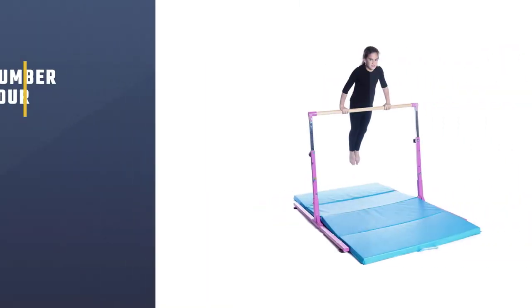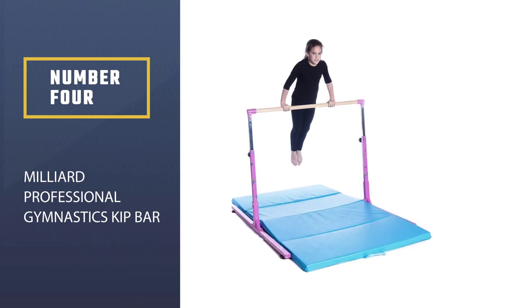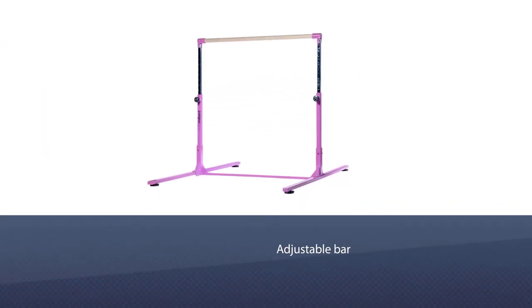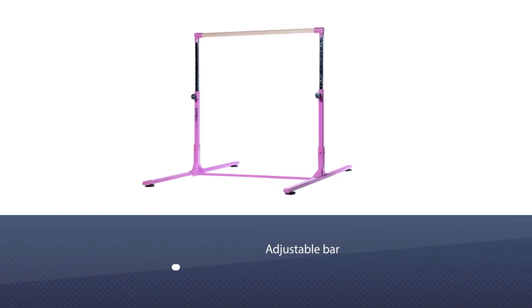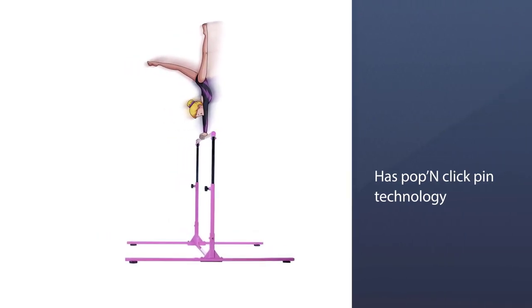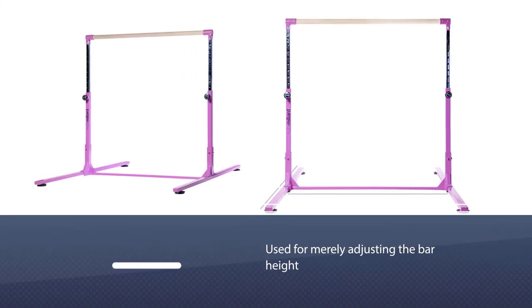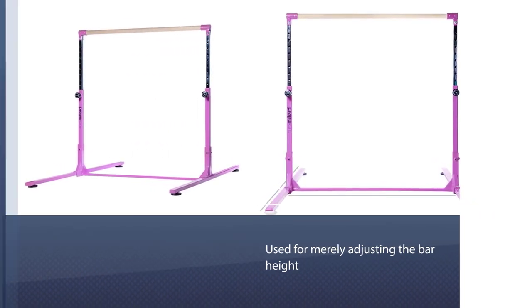Number four: Milliard Professional Gymnastics Kip Bar. Milliard is one of the famous brands. This adjustable bar has pop and click pin technology for merely adjusting the bar height. It comes with removable soft corners to eliminate injury. The bar has 12 options for the height adjustable kip bar. It is flexible for the folks under the height of 2.5 to 5.5 feet tall.